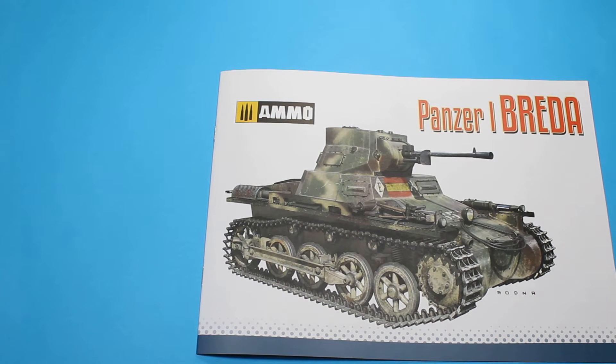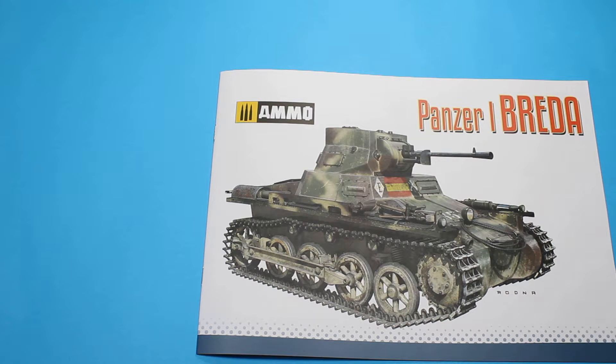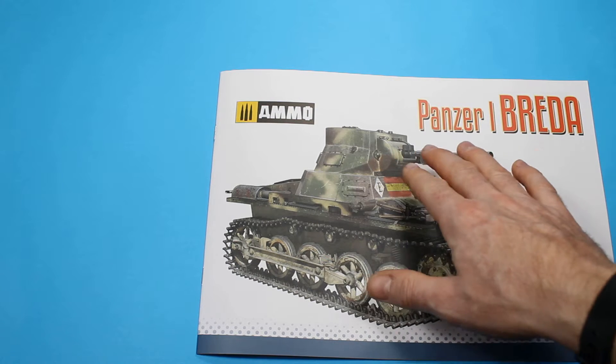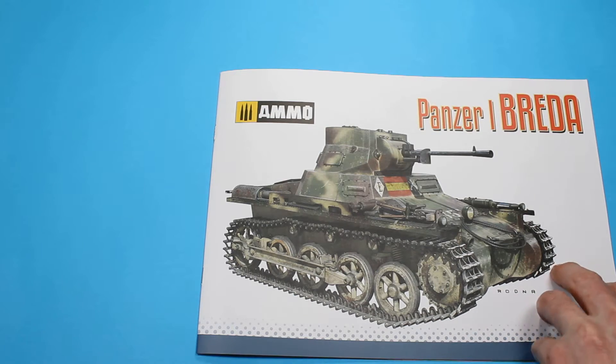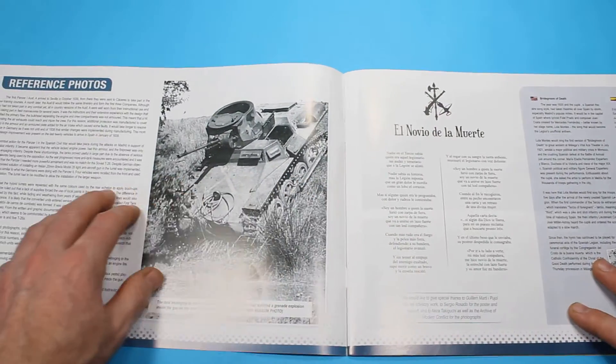This release represents the Panzer I Breda version, which was a field modification, there was four vehicles that had it done to them during the Spanish Civil War. The Germans supplied the Panzer I A into the Spanish Civil War. I think it's roughly around 100 vehicles went in with a few of the command versions. There was a few Bs as well, which has got a longer chassis, but all of those were armed with two twin MG 34 machine guns in the turret. So they're pretty much anti-personnel tanks, as opposed to an infantry support, as opposed to tank-on-tank vehicles.